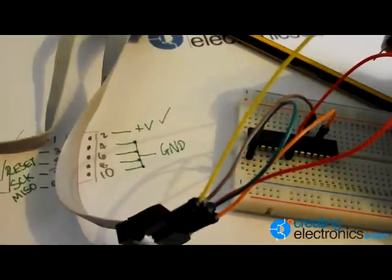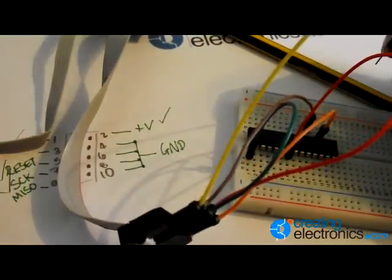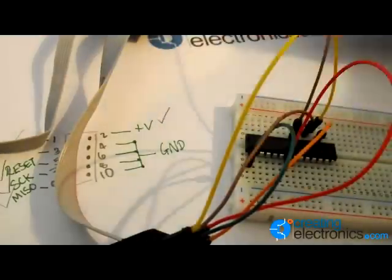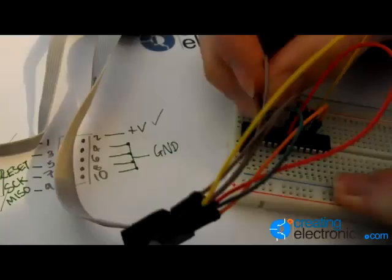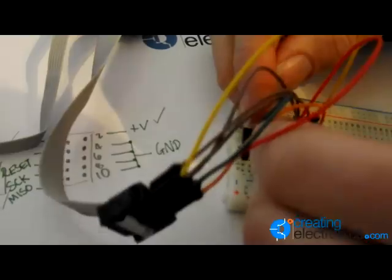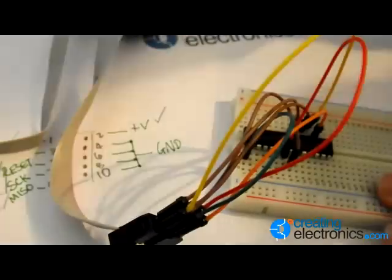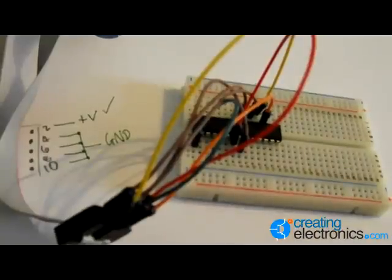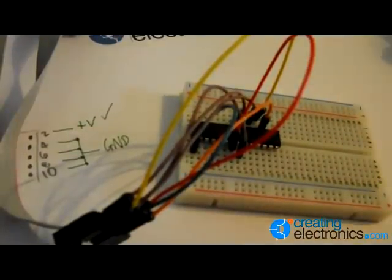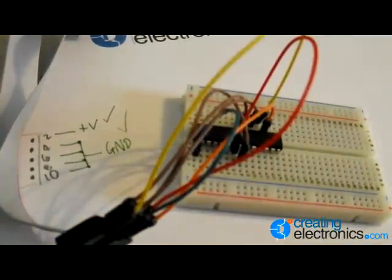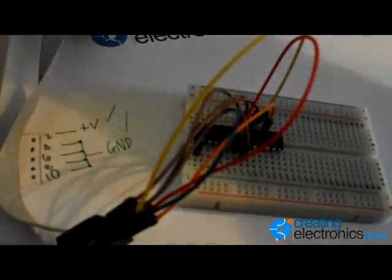So once you've got everything connected, it should look a bit like that, maybe a bit neater than mine. We also need to test if the programming's worked, so we want to add an LED which we're going to try and make flash. I'm going to put that on pin 2, which is actually port D of the chip. And you need to make sure the LED short leg is connected to negative.